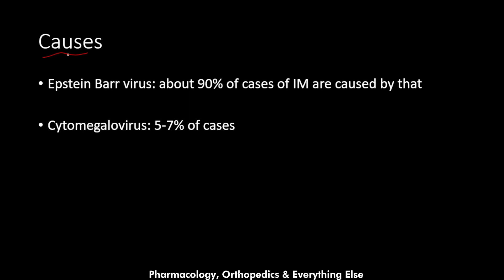Causes of mono include the Epstein-Barr virus, which accounts for about 90% of cases, and the cytomegalovirus, which causes 5 to 7% of cases, with other viruses accounting for the remainder.